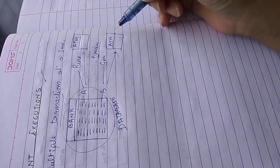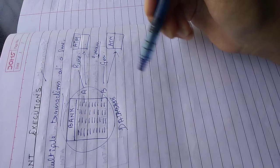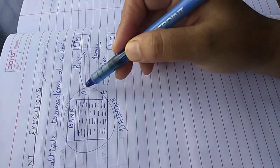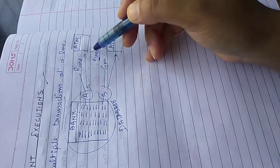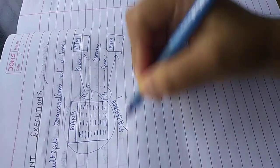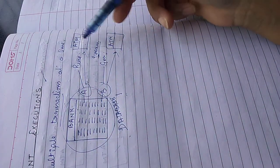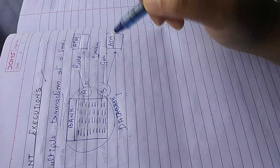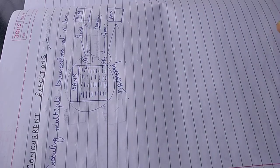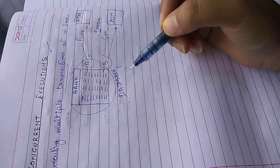This is known as concurrent. Means there are multiple transactions going on at the same time. You know that not only A and B are withdrawing their money, there may be C, D, E, F, number of people will be withdrawing money from the ATM at the same time. Now let's see how the concurrent transactions take place.